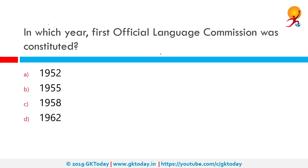In which year was the first Official Language Commission constituted? The correct answer is 1955. The first Official Language Commission was constituted under B.G. Kher as the chairman, appointed in 1955. It submitted its report in 1956, which was presented to Parliament in 1957 and examined by a joint parliamentary committee.